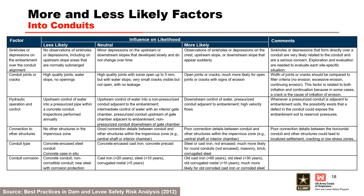This table from the best practices manual can be used to help assess the likelihood of open defects in conduits. It can be used as a starting point, but the risk team must develop project-specific more likely and less likely factors to guide subjective probability estimation. The factors in this portion of the table address sinkholes or depressions over the conduit alignment, conduit joints or cracks, hydraulic operation and control, connections to other structures, conduit type, and conduit corrosion.